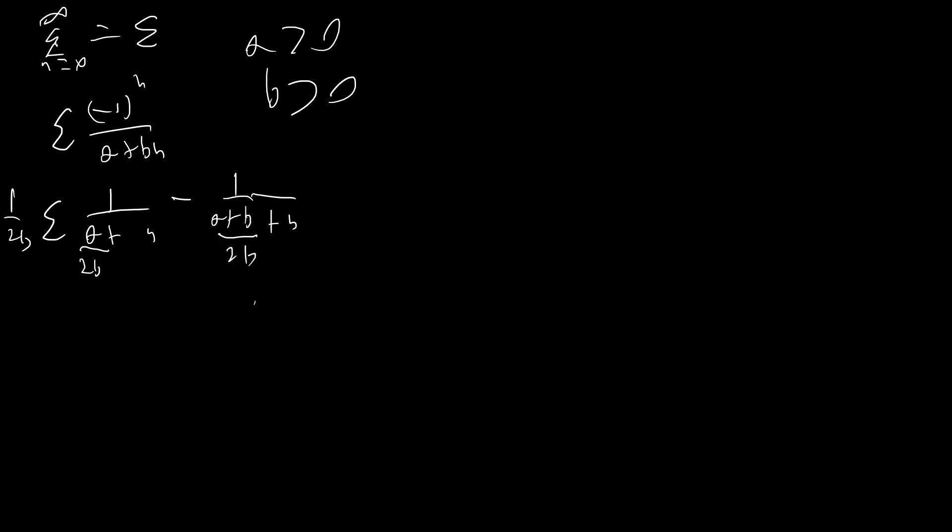And now what we're gonna do is we're going to split this up here. I'll just make some space. 1 over 2b times the sum 1 over a over 2b plus n minus 1 over n plus 1, and then we're gonna add 1 over n plus 1 and then subtract 1 over a plus b over 2b plus n. And so this is our big sum, and on the outside we're just going to add gamma over 2b and subtract gamma over 2b.